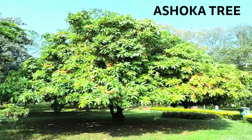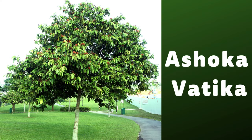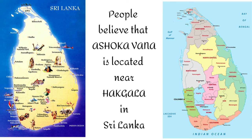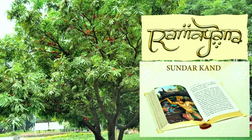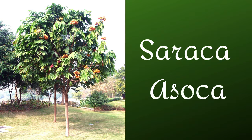Welcome to the Ramayana Biodiversity Videos. This video explores the flora mentioned in the Ramayana — trees, flowers, fruits, etc. The Ashoka tree is mentioned in the Ramayana in the Sundara Kanda. An Ashoka Vatika, a garden of Ashoka trees, is located in Lanka. The Ashoka tree plays an important role in the Ramayana.